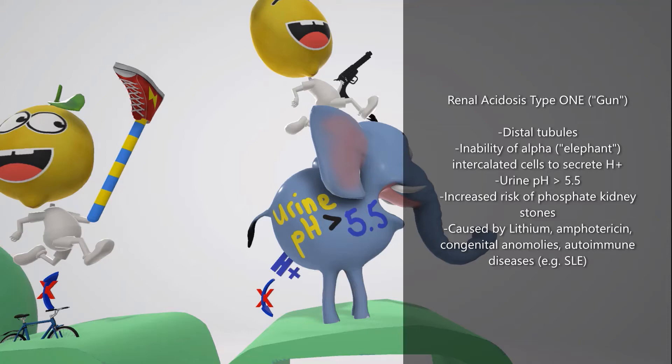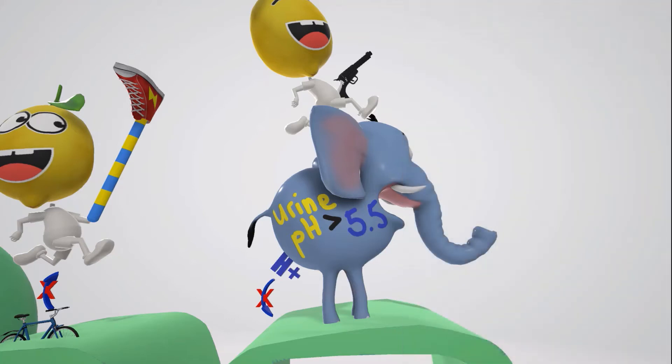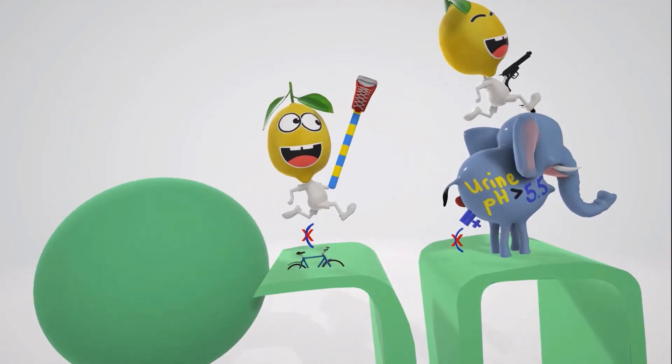Causes of RTA type 1 include amphotericin B toxicity and lithium toxicity, since these make the cell membrane more permeable so hydrogen can freely flow from the tubule into the cells and back into the blood. Other causes include congenital anomalies, obstruction of the urinary tract, and autoimmune diseases such as SLE.